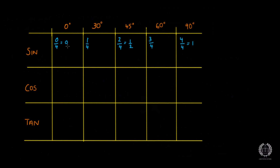The next thing we're going to do is square root all of these numbers. Square root of 0 is just 0, so sine 0 is 0. Then we do the square root of 1 over 4 — the whole thing. That means square root of 1 over square root of 4, which is 1 over 2, so the answer is a half.